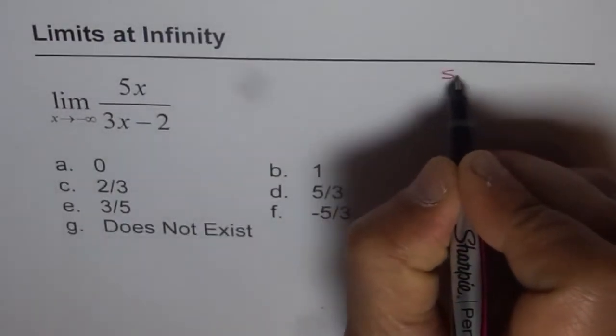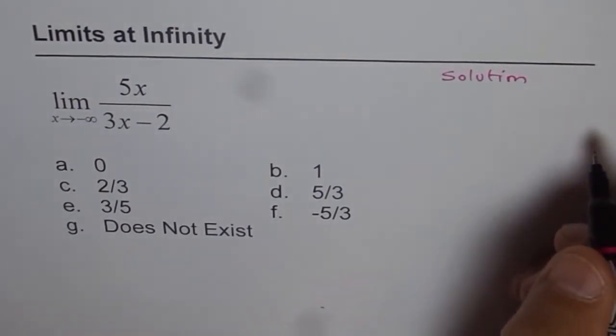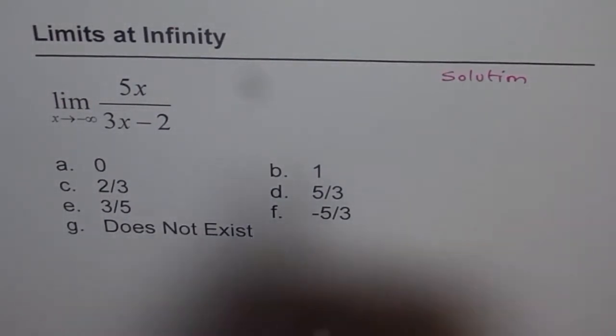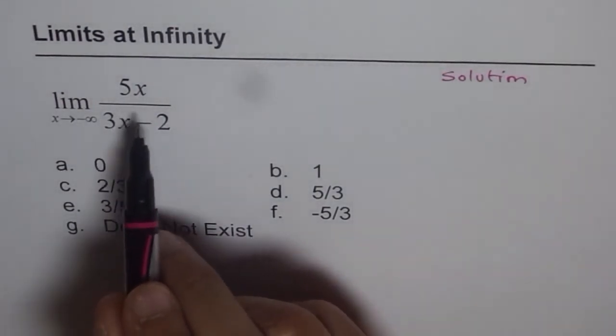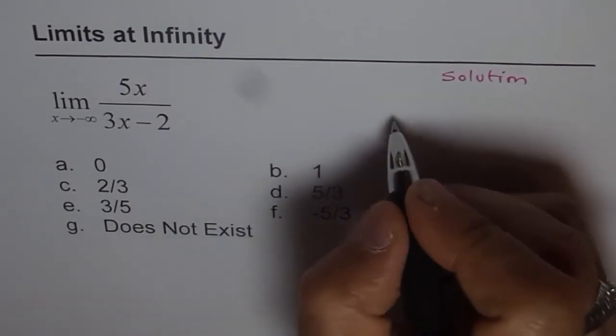To find the solution, we can divide both numerator and denominator by x, and then we can find the limit at infinity or negative infinity. In this case, if we do that...